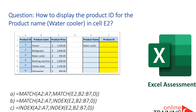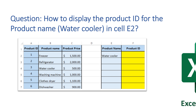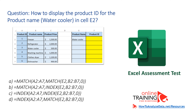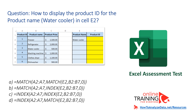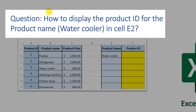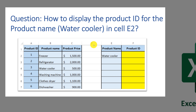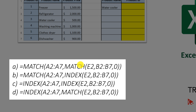Not so long ago, Excel assessment test questions always had VLOOKUP functions in them. Since additional functionality was added into Microsoft Excel, now you are tested on your knowledge of INDEX and MATCH functions, which are a more sophisticated equivalent of VLOOKUP. For example: how to display the product ID for product name 'water cooler' in cell E2. You're presented with a screen showing different product IDs, product names, and prices, and four choices: nested match inside match, nested index inside match, nested index inside index, and nested match inside index function.